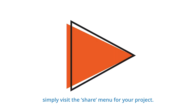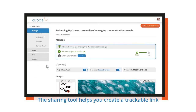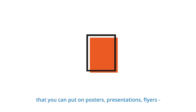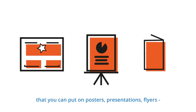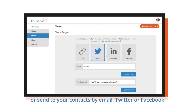Simply visit the share menu for your project. The sharing tool helps you create a trackable link that you can put on posters, presentations, flyers, or send to your contacts by email, Twitter or Facebook.